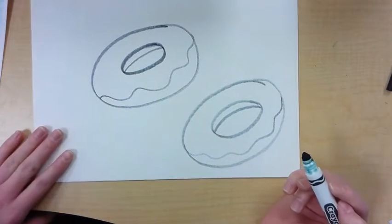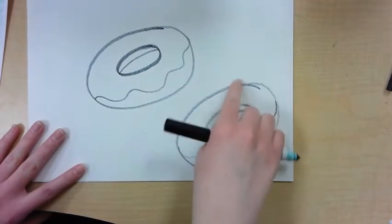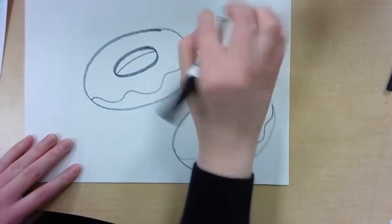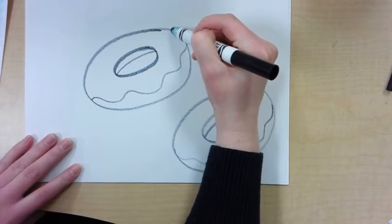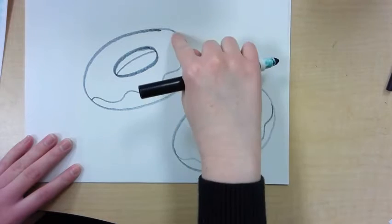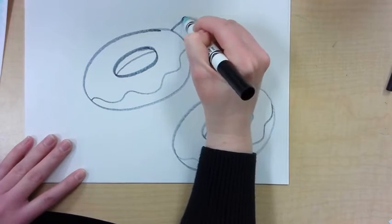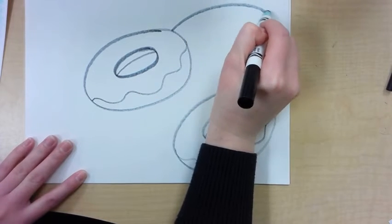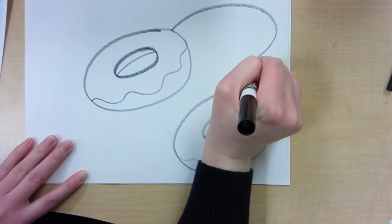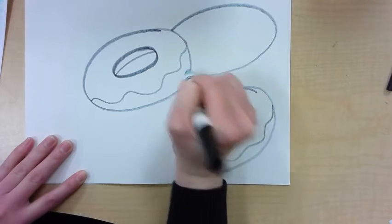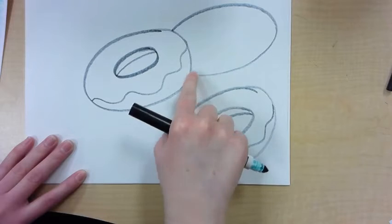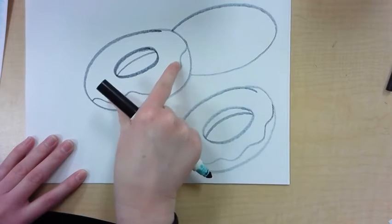To make this look like it's overlapping or on top of another doughnut, make an oval starting from the side of this one. And it's not going to be a complete shape. It's going to stop here. It looks like there's a doughnut behind this one.